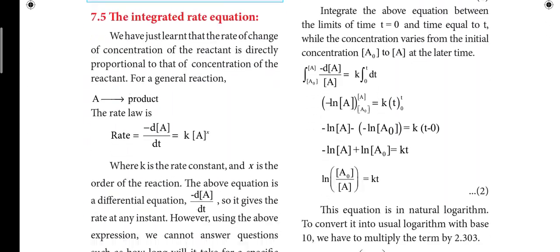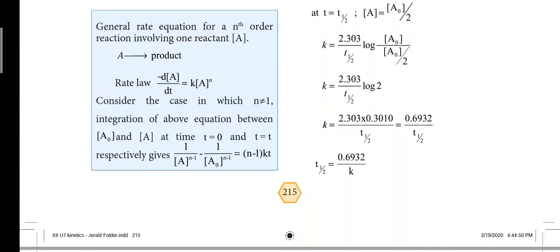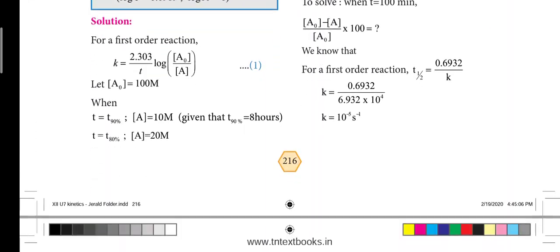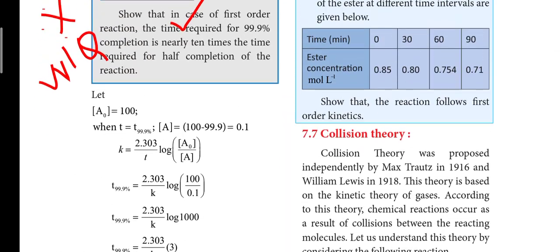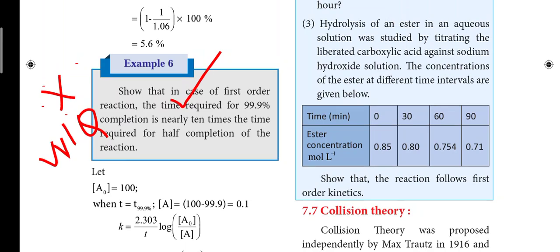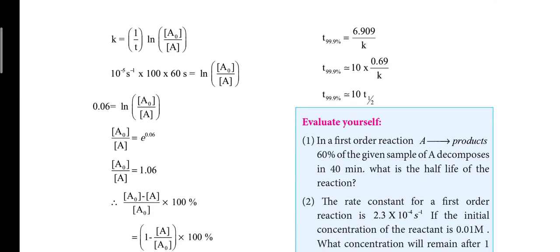Next, there is a very very important problem — page number 217, Example 6: Show that in the case of a first order reaction, the time required for 99.9% completion is nearly 10 times the time required for half completion of the reaction. This is an important 3 mark question — asked in quarterly, half-yearly, and all government exams.